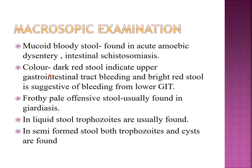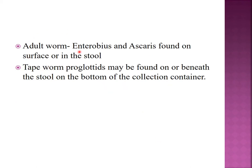If the color of stool is dark red, this is indicative of upper GIT bleeding, whereas bright red stool is suggestive of bleeding from lower GIT. Frothy, pale, offensive stool is found in case of Giardia infection. In liquid stool, trophozoites are usually found, whereas in semi-formed stool, both trophozoites and cysts are found. Sometimes adult parasites such as Enterobius and Ascaris can be seen in the stool sample, and proglottids of tapeworm can also be found at the bottom of the container.